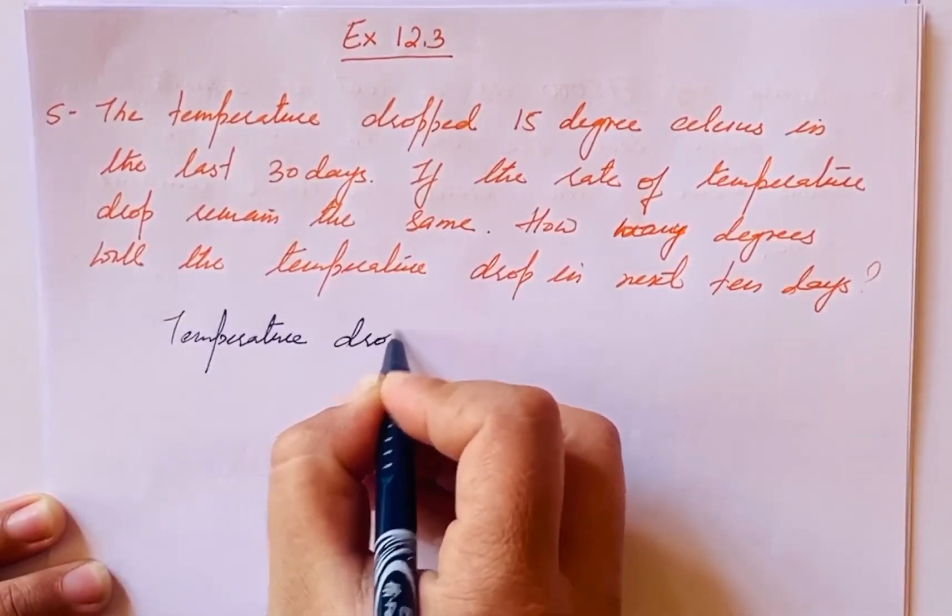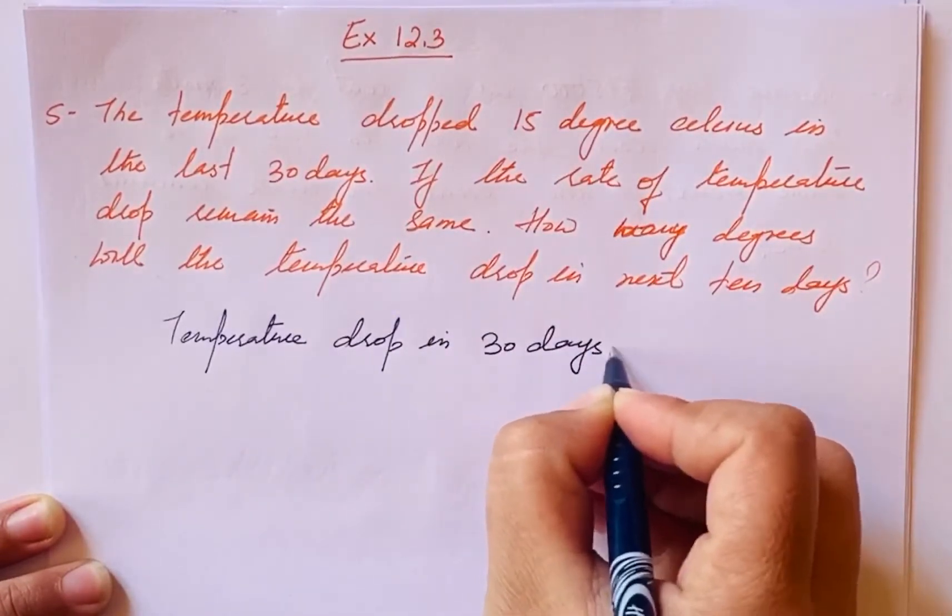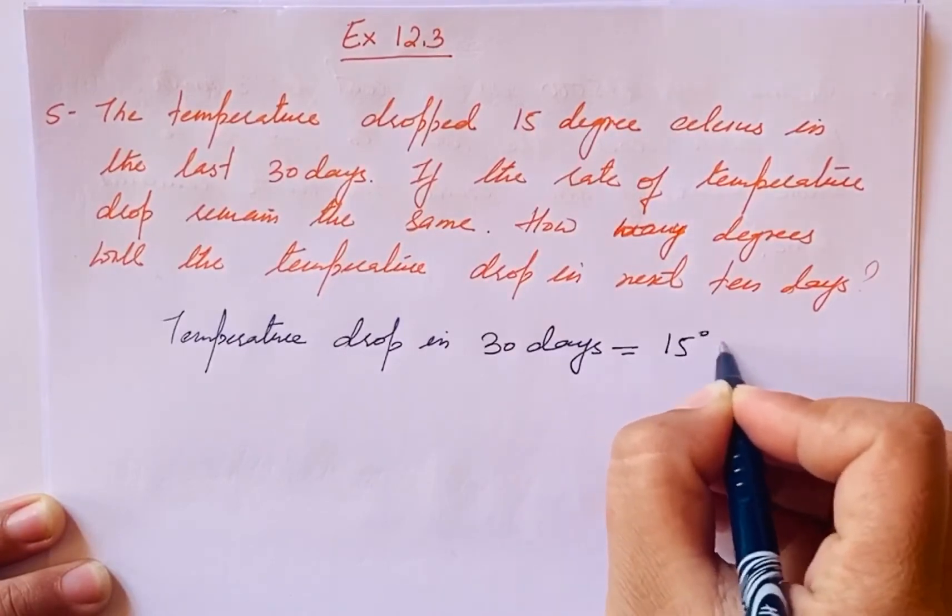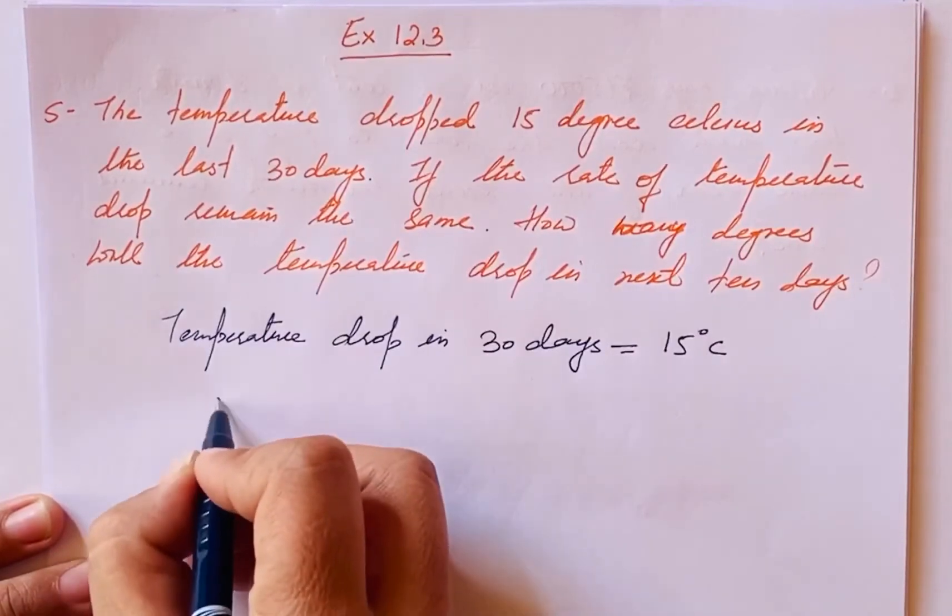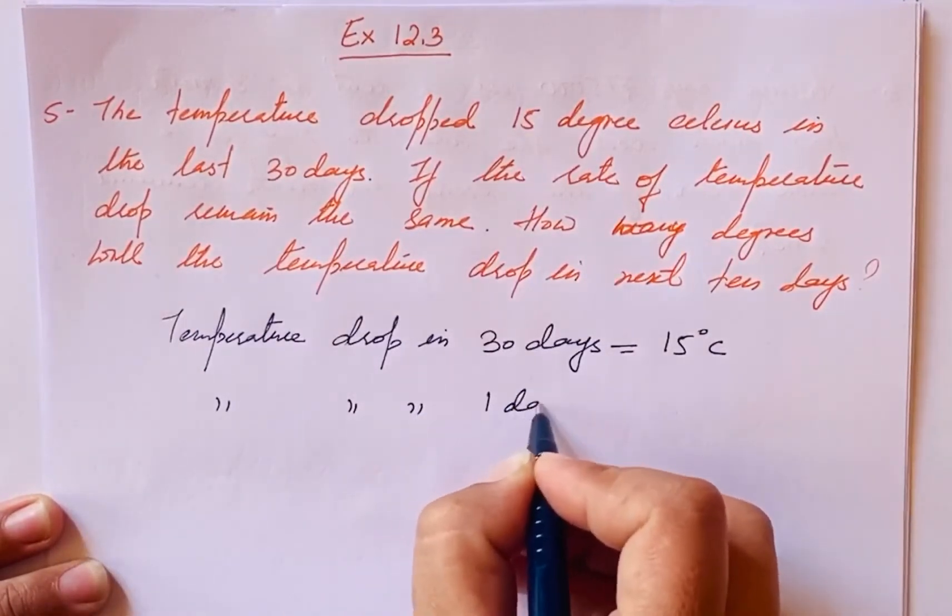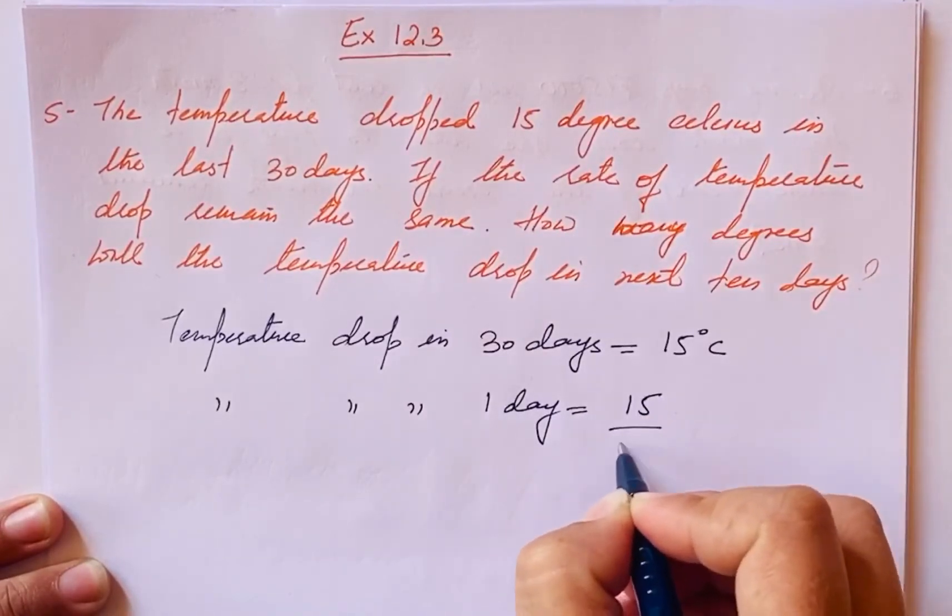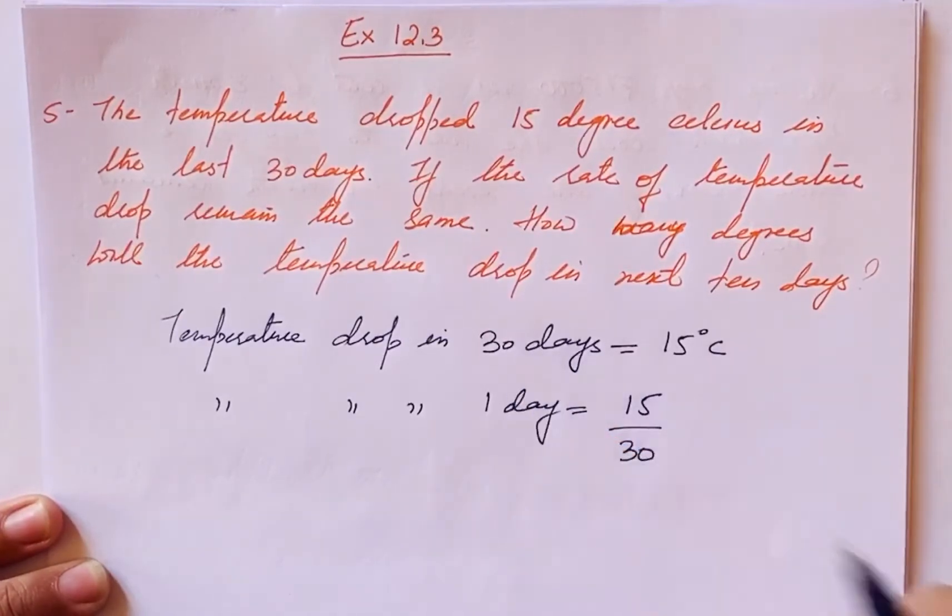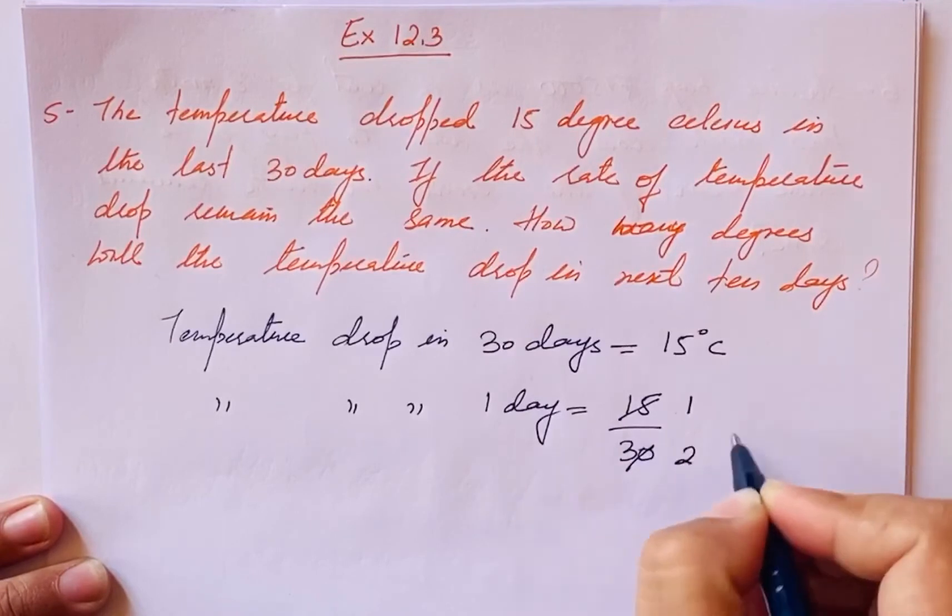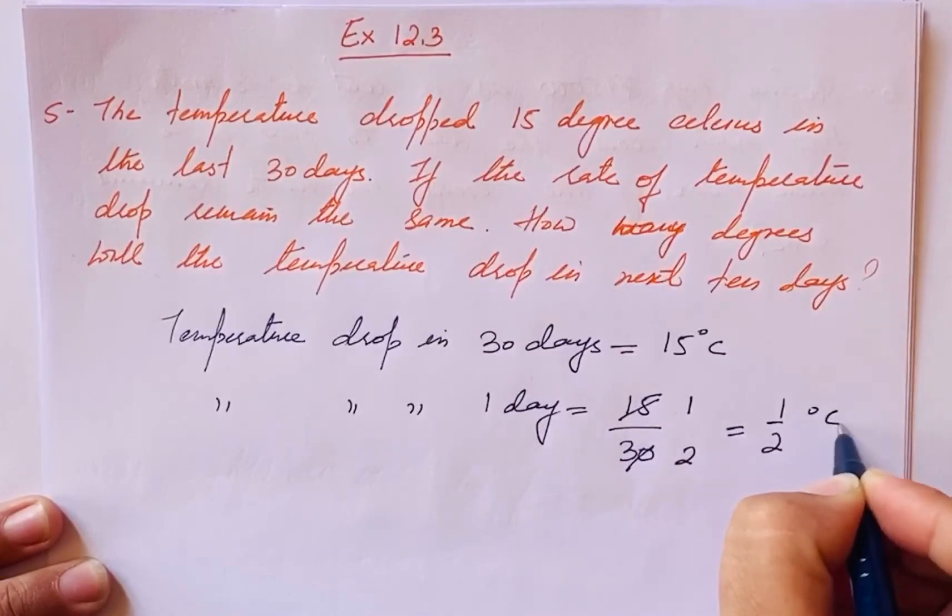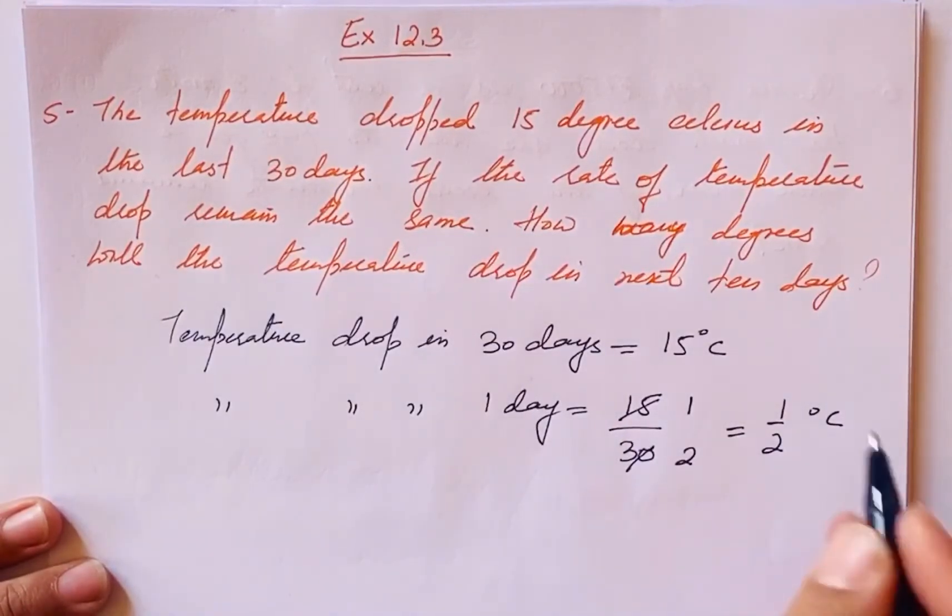Temperature drop in 30 days is 15 degrees Celsius. Now we calculate for one day. Temperature drop in one day will be 15 divided by 30. When we solve this, 15 ones are 15, 15 twos are 30, so this becomes 1/2 degrees Celsius.